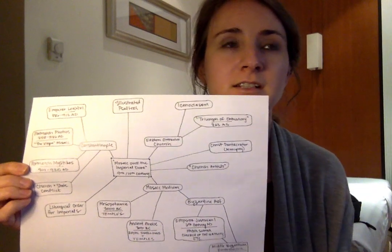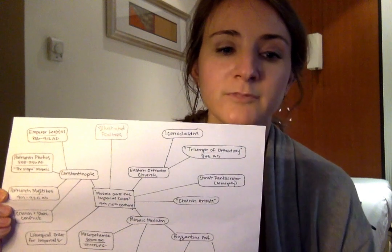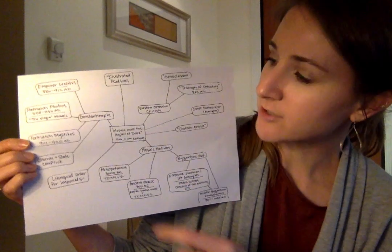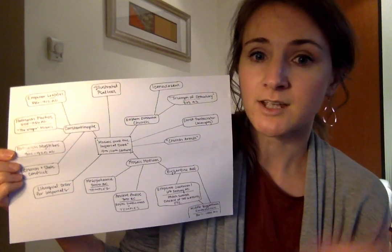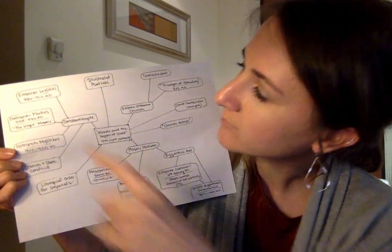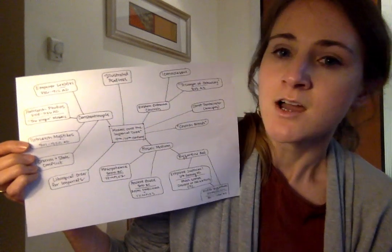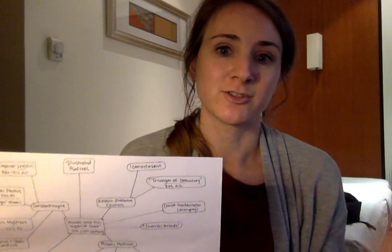Constantinople was experiencing recent conflicts between the patriarchs of the Eastern Orthodox Church — which was the seat of the church at that time — and the emperors, specifically Emperor Leo, or Leon, the Fifth, depending on who you ask. So it was kind of a battle between church and state at the time.